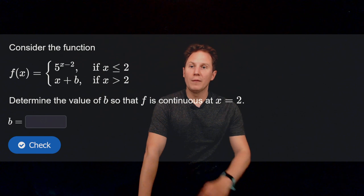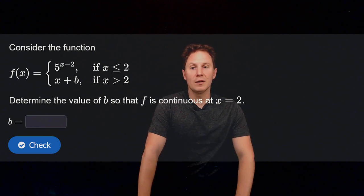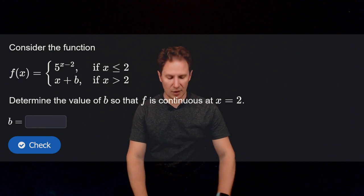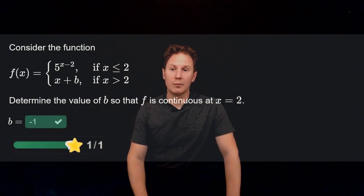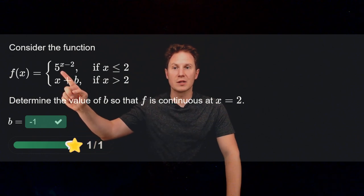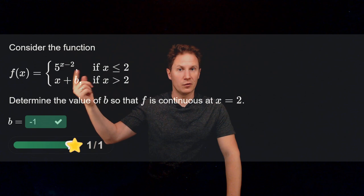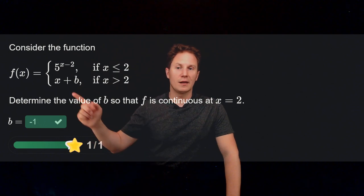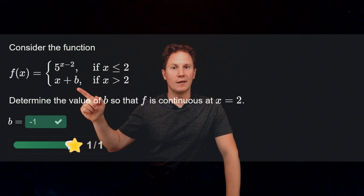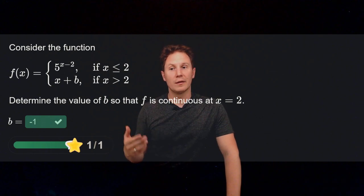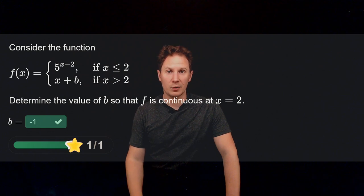Next question — a similar one. f is defined in a piecewise way and we should determine the value of b so that f is continuous at x equals two. The answer is negative one. The value of the function at x equals two, from the first line, is five to the two minus two, that is five to the zero, which is one. So the limit as x approaches two needs to be one as well, and taking the right-hand limit from the second line we get two plus b equals one, which means b equals negative one.